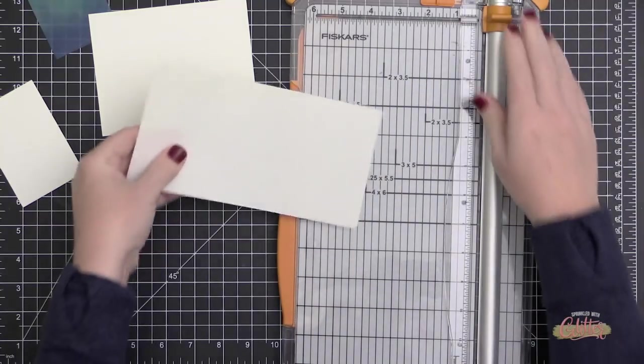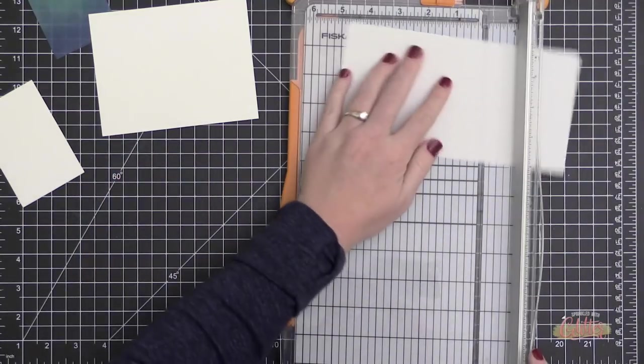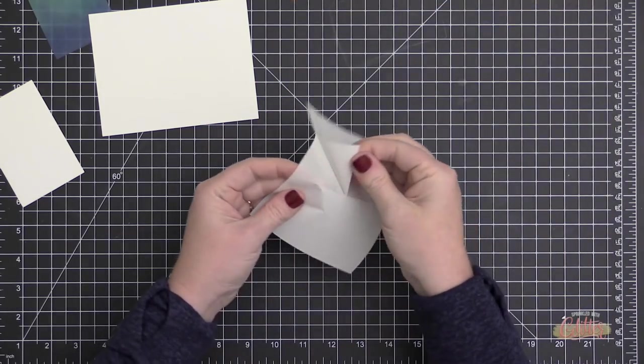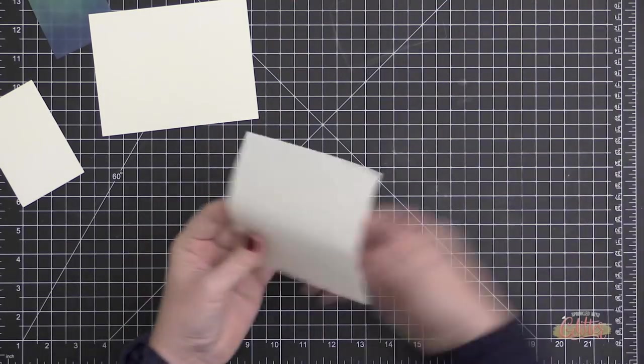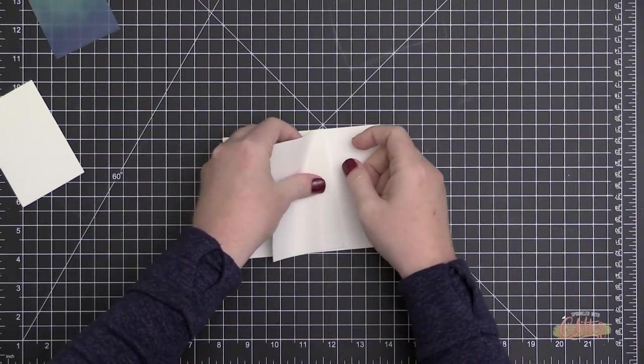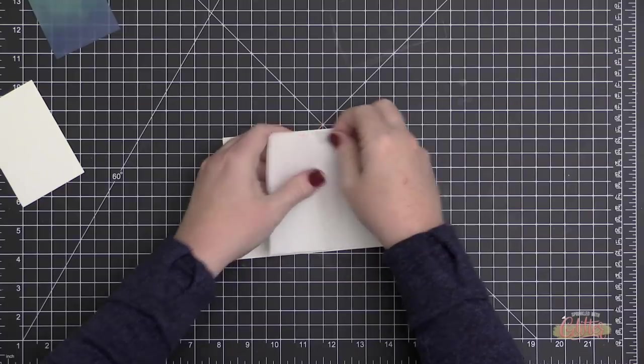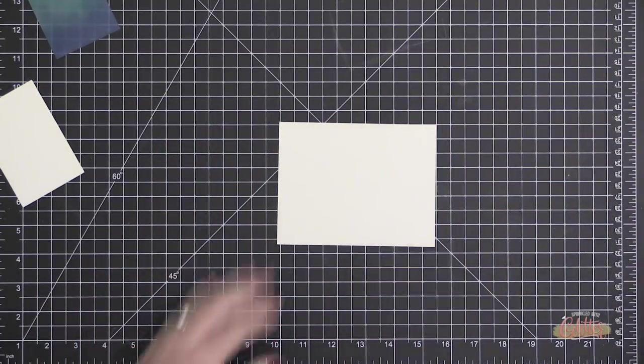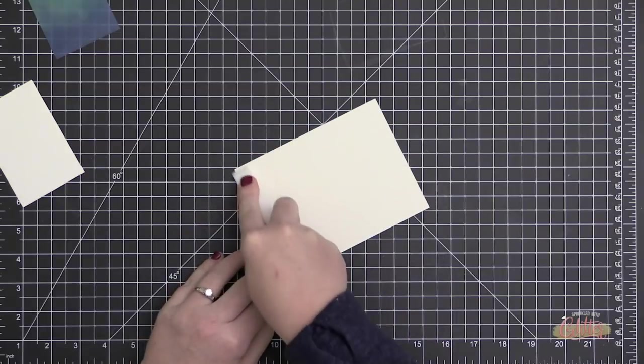Now I'm going to cut down some Stick It adhesive because I'm going to do the die cutting with my Snowflake Window Die. Because this is a really intricate die, I wanted to make sure that I had adhesive on the back of my cardstock so I wouldn't have to fuss with any kind of liquid glue and worry about it oozing out.